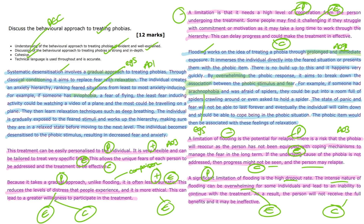Technical language is used consistently throughout the response. Terms such as classical conditioning and anxiety hierarchy really help to convey the key concepts involved in behavioural psychology. They add precision and depth to the discussion and demonstrate a really clear understanding of the subject matter. Overall, the answer effectively describes and evaluates both systematic desensitisation and flooding as behavioural approaches to treating phobias. It includes specific examples to strengthen the explanations and employs a really structured approach to the evaluation.